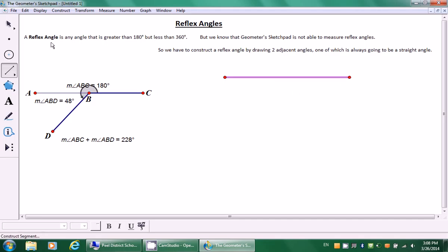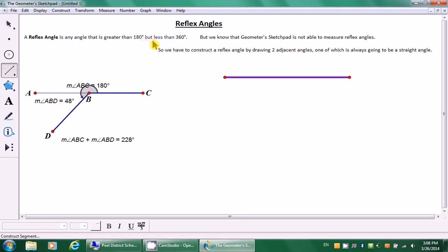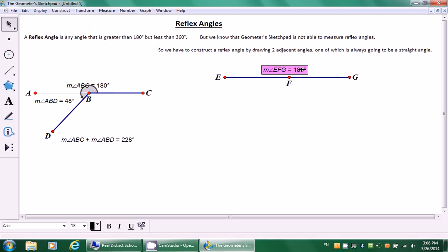So let's continue. Let's draw a second straight angle. I'm going to use the shift key again and draw a horizontal line. Because the last line we changed was thin, it's going to draw the next line thin. That's okay. I'm going to go to display, line style, medium.